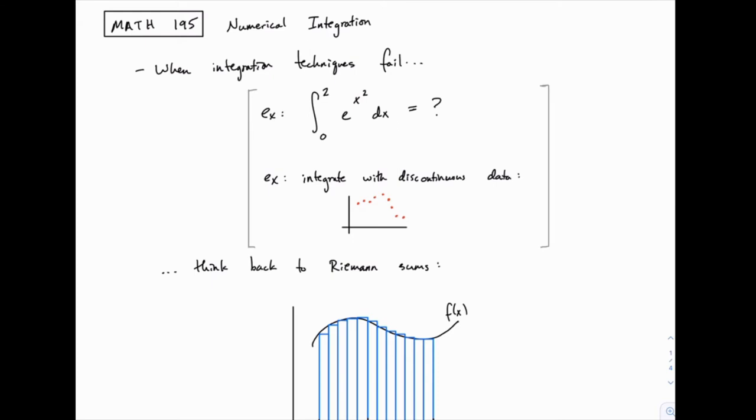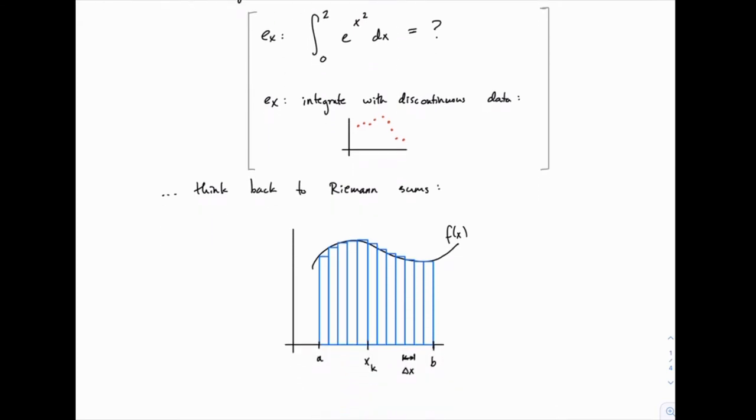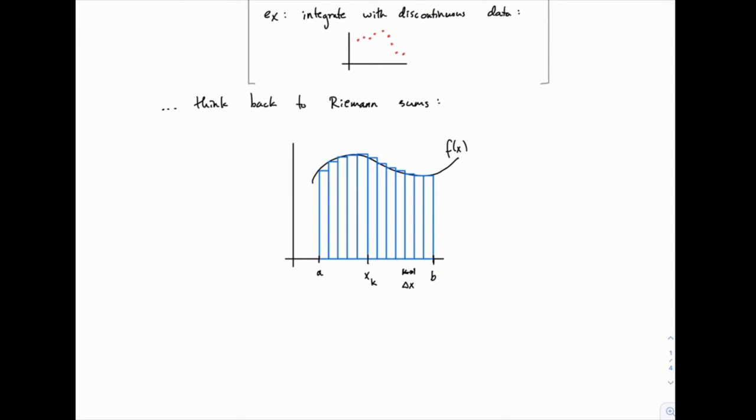When you first learned about integration, you learned about something called the Riemann sum. The Riemann sum says we can approximate the area under a function, which we know is the same thing as a definite integral. We can approximate this area using rectangles, and by including many rectangles that approximate the shape of the curve, we can take these simple geometric figures and find the area for all of these and add them up.